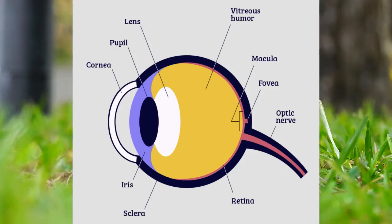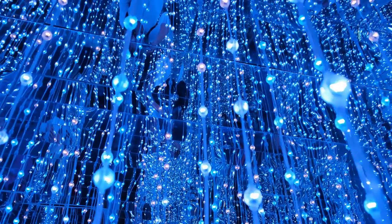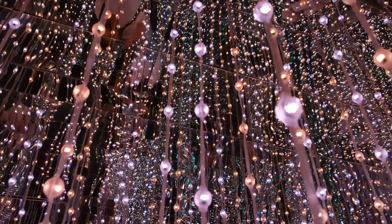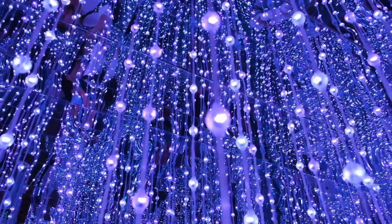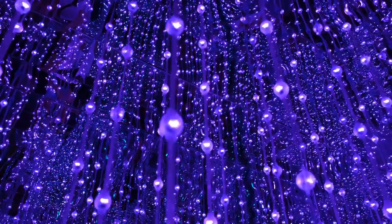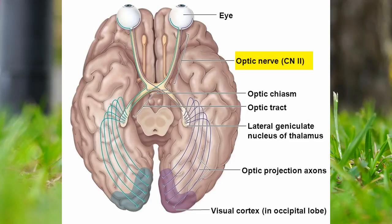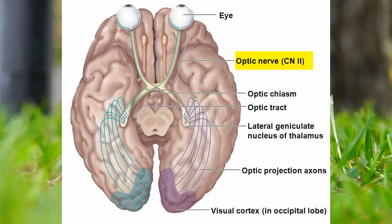Would you want to wire up that many electrical connections in that small of a space? I wouldn't. But my Heavenly Father did. The optic nerve is a cable-like nerve transmitting visual data — now that's a data stream. And if any of those parts are missing, your eye won't work right.